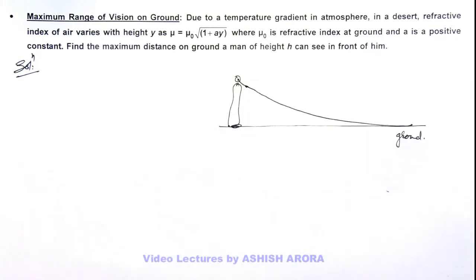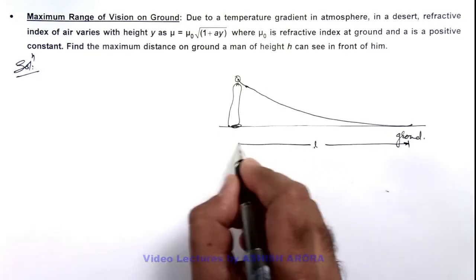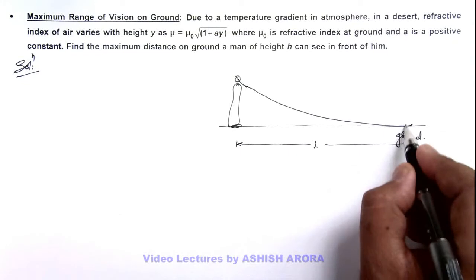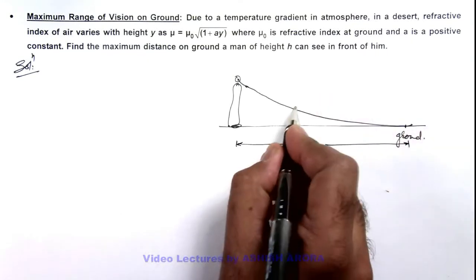So here we can say this is the length l, up to which the man will be able to see, or the point from which the light ray grazing along the ground will enter in the eye of this man.